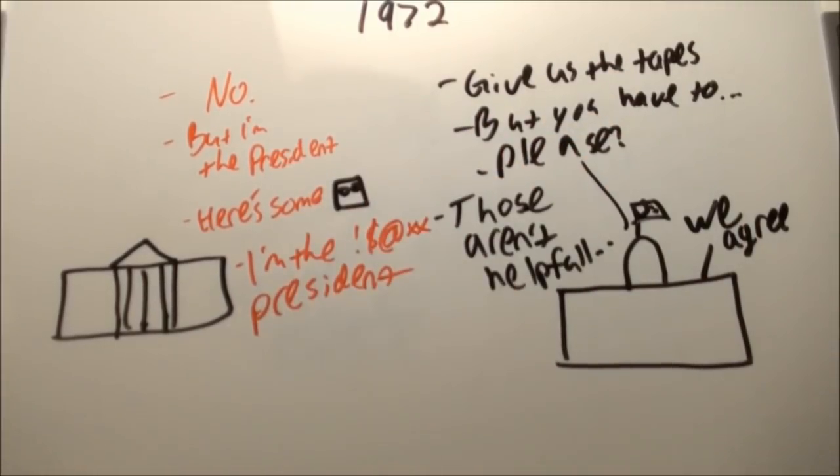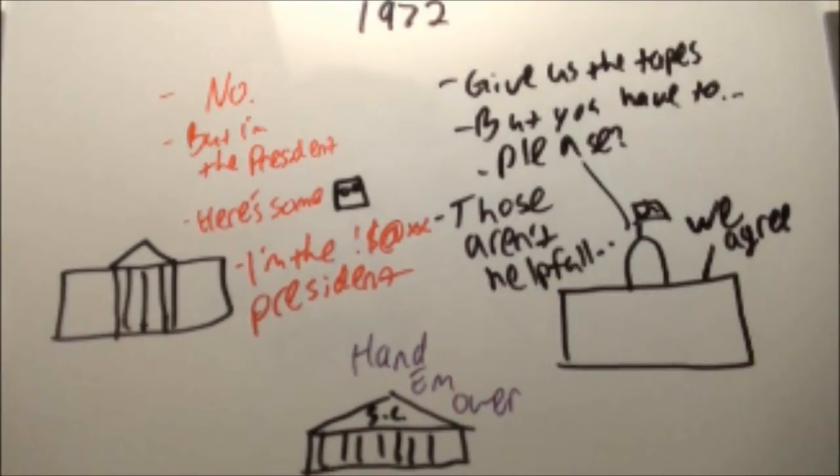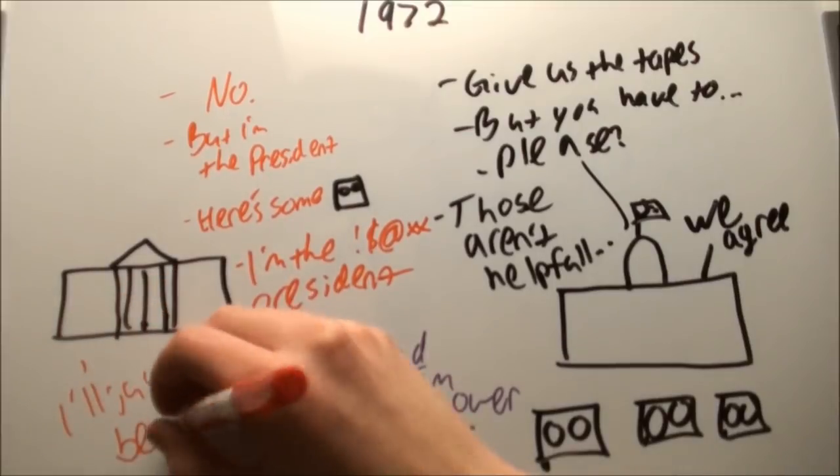The briefing goes on for a while until the Supreme Court steps in and says that since Nixon may have committed a crime, executive privilege doesn't apply. So Nixon has to turn the tapes over and it becomes pretty clear that he was involved in the burglary and generally a bad person, so he resigns.